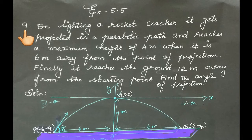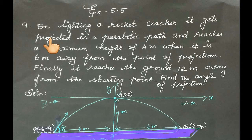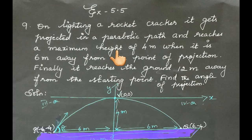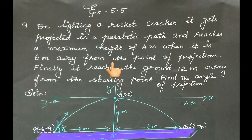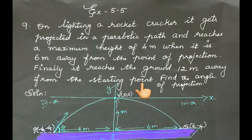Exercise 5.5, 9th sum. On lighting a rocket cracker, it gets projected in a parabolic path and reaches a maximum height of 4 meters when it is 6 meters away from the point of projection. Finally, it reaches the ground 12 meters away from the starting point. Find the angle of projection.